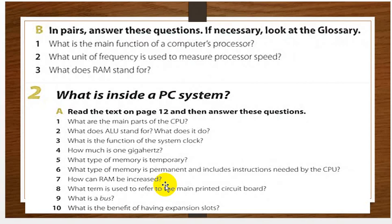Then we have to answer these questions. If necessary, look at the glossary — the glossary is at the end of the book. You have the PDF of the book and you can check the glossary. What is the main function of a computer? We have three questions. The first question is: what is the main function of the computer processor? The second question is: what unit of frequency is used to measure processor speed? And question number three: what does RAM stand for?